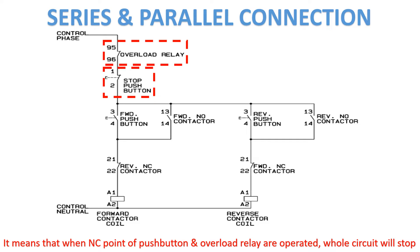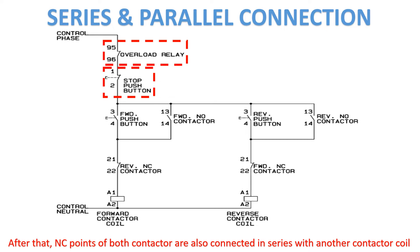This means that when the NC points of the push button and overload relay are operated, the whole circuit will stop. After that, NC points of both contactors are also connected in series with the other contactor coil.